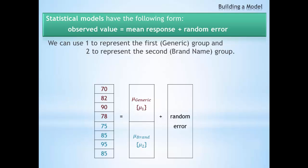Now we will take this observed data and break it up into two groups: the true population mean, the mean response, and the random error.